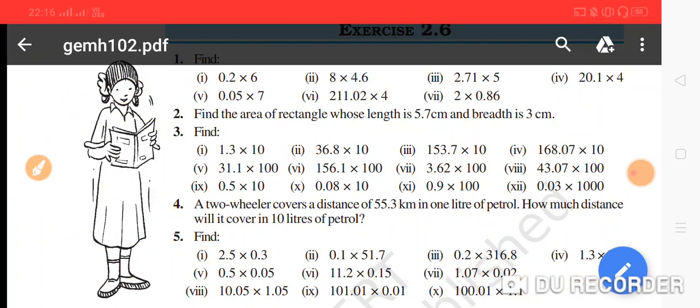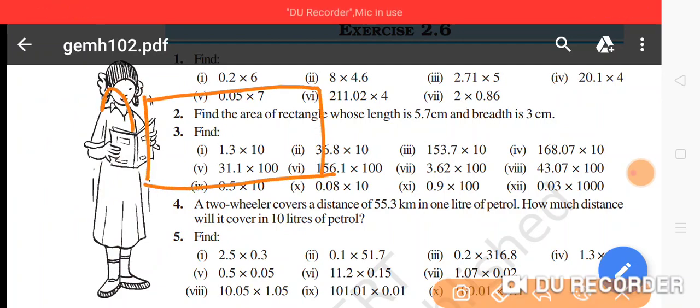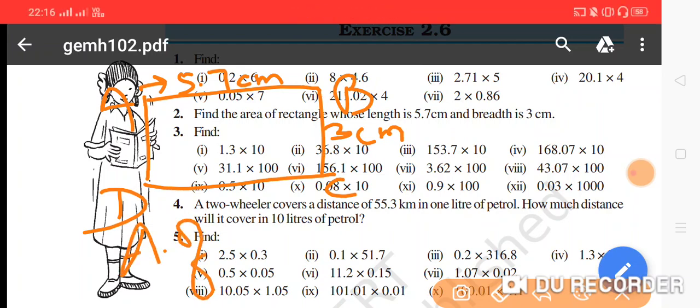We need to find the area. So if this rectangle is named ABCD, the length is 5.7 centimeter and the breadth is 3 centimeter. We need to find the area of rectangle, and the area of rectangle is length multiply by breadth.